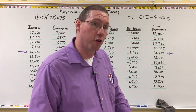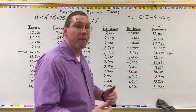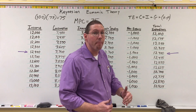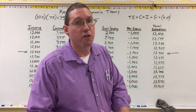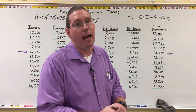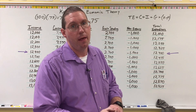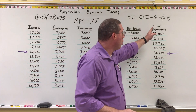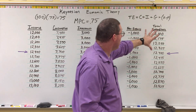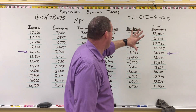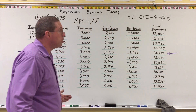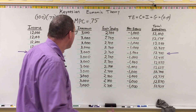His argument was that if the economy is in a recessionary gap and we need to increase real GDP, the way that that's going to happen is by increasing total expenditure. Total expenditure is made up of four parts, so which one should we increase?